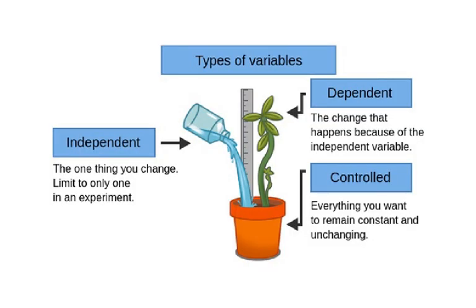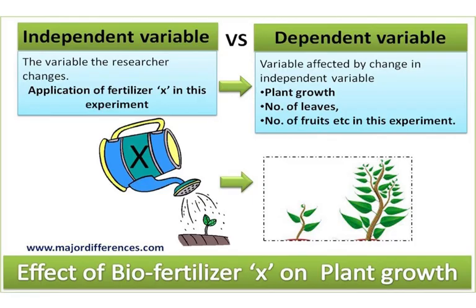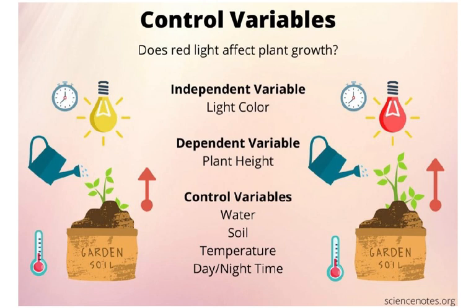Another way to explain this: the independent variable is the one thing you change — limited to only one in an experiment. The dependent variable is the change that happens because of the independent variable. The controlled variables are everything you want to remain constant and unchanged. For example, in an experiment asking 'does red light affect plant growth?', the independent variable is light color, the dependent variable is plant height, and the controlled variables include water, soil, temperature, and day and night time.